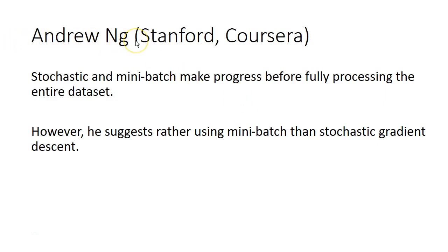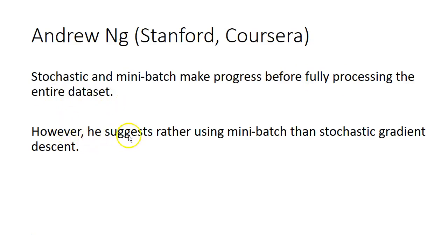However, Andrew Ng — the well-known lecturer and researcher in machine learning and deep learning from Stanford University, who also created great courses on Coursera covering deep learning, machine learning, linear regression, logistic regression and more — says that stochastic and mini-batch make progress before fully processing the entire data set. However, he suggests to rather use mini-batch than stochastic gradient descent, and he has a few reasons for that suggestion.